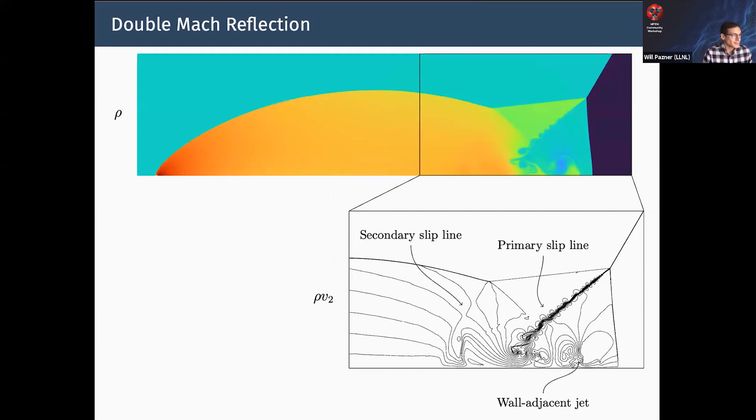This is an example of a benchmark problem for the compressible Euler equations, double Mach reflection, using a higher-order method with convex limiting. It's a relatively coarse mesh, but you get good resolution of this secondary slip line - this feature is subtle and hard to capture with low-order methods. You also get good resolution of the Kelvin-Helmholtz instability on the primary slip line.